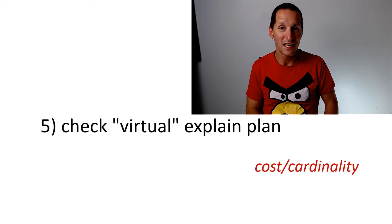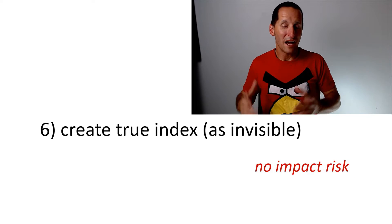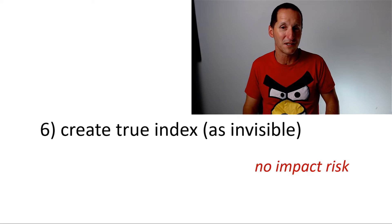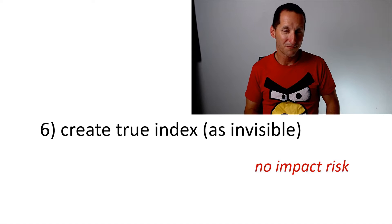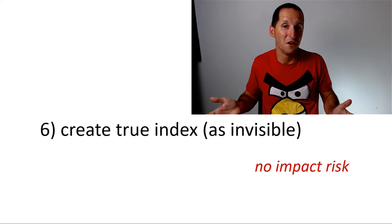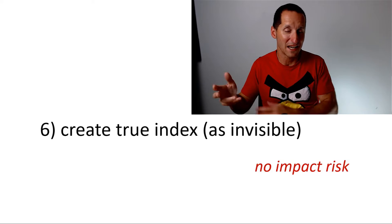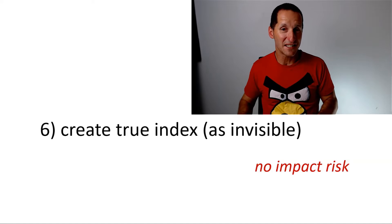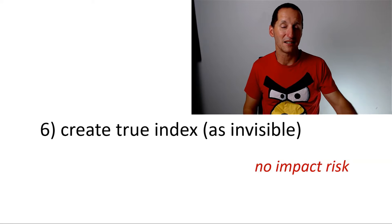We can get an explain plan based on indexes that exist only as metadata. The advantage is that we're doing a validation step: if these indexes actually came into existence, are those SQLs actually going to use them? Just because an index is there doesn't mean the optimizer will pick it up - it does a costing and cardinality decision. Once I'm confident the execution plan will use those indexes, I actually go ahead and create them physically, but I create them as invisible. If I just create an index normally, it is immediately available to every query in the system.